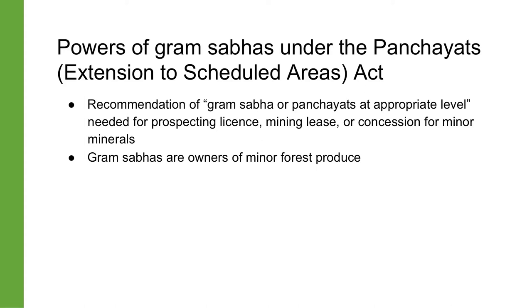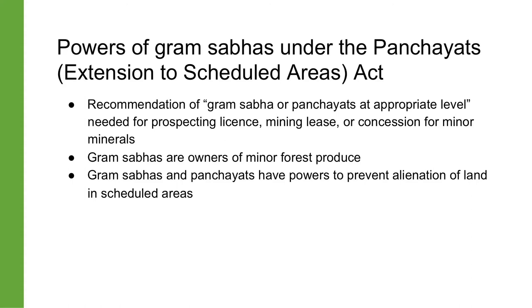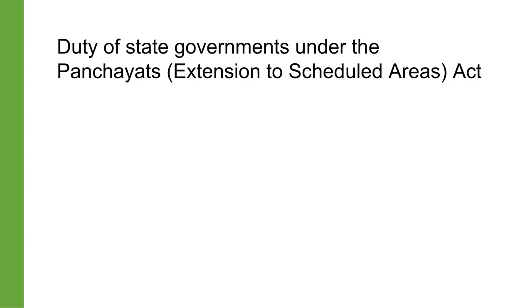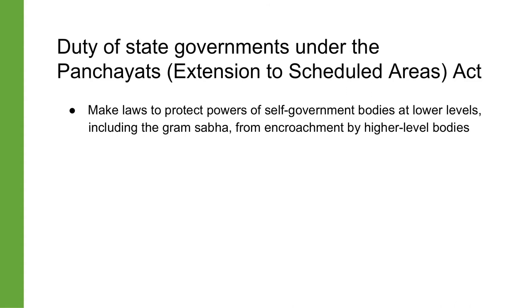The Gram Sabhas are also the owners of minor forest produce. Both Gram Sabhas and panchayats at the appropriate level have the power to prevent the alienation of land in Scheduled Areas and to take action to restore illegally alienated land. PESA also instructs states to make laws ensuring that the powers of self-government bodies at the lower levels, including the Gram Sabha, are not encroached upon by bodies at higher levels. The Gram Sabha is the entire body of adult members of a particular village, while the Gram Panchayat is the elected body — the Sarpanch, ward members, Upsarpanch — constituting the executive body.